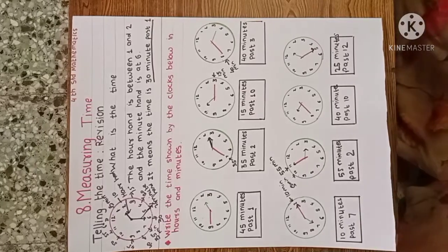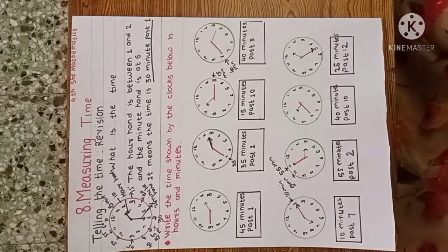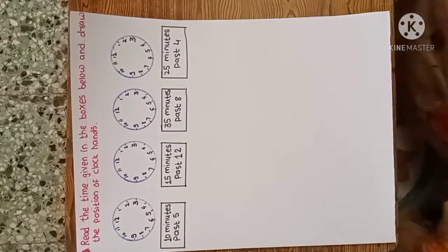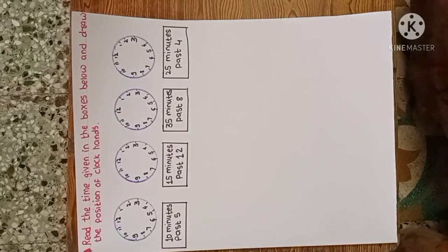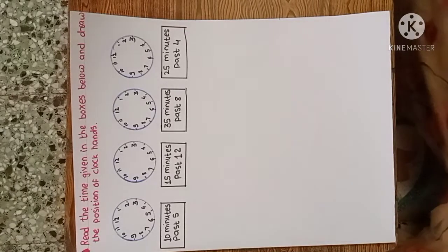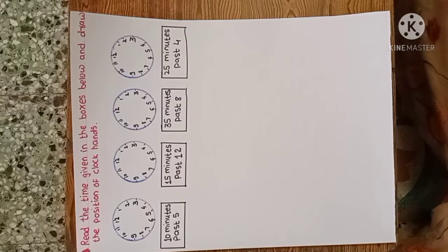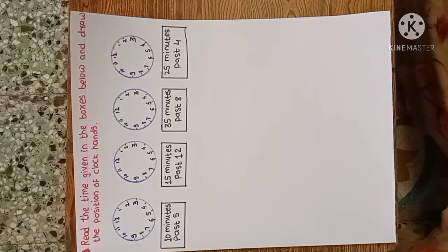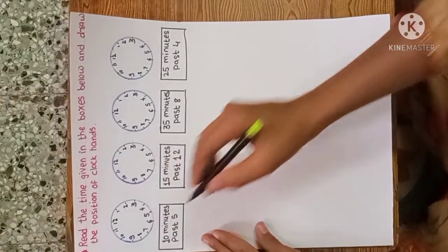Now we have been given the time and we have to draw the position of the minute hand and hour hand on the clock. First time is 10 minutes past five, so we need to draw the hands accordingly.